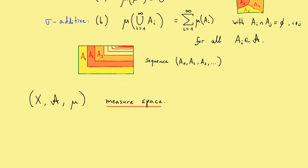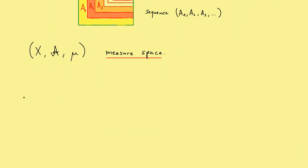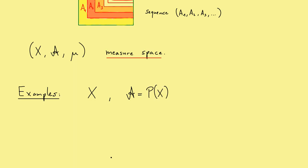Now let's talk about some simple examples. We fix for all examples an arbitrary set X and a sigma algebra on X. We start with the best case where we can choose the whole power set for the sigma algebra. The first measure is very important and very easy — it's called the counting measure, and no matter what the set X is, you can always define it.